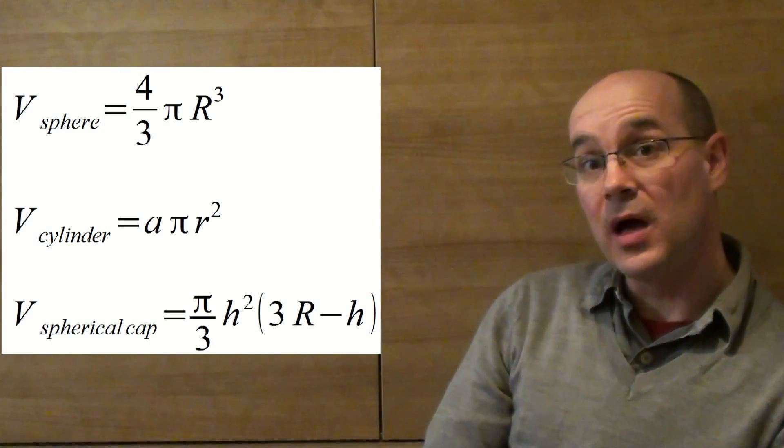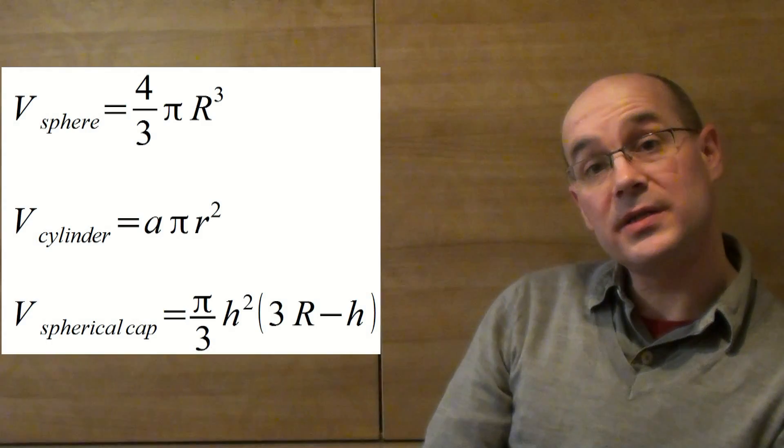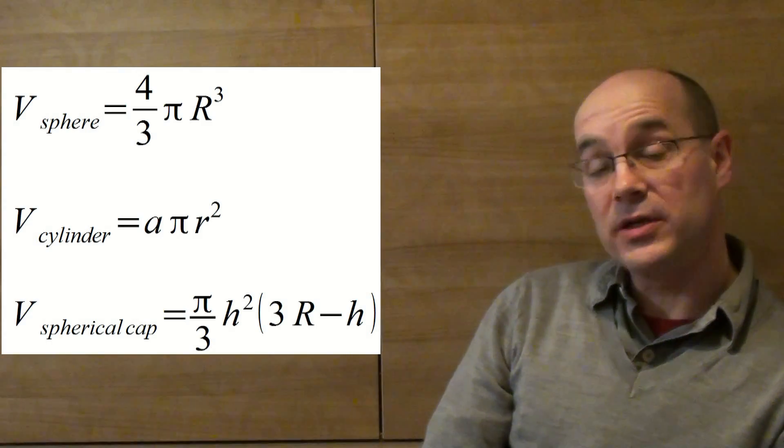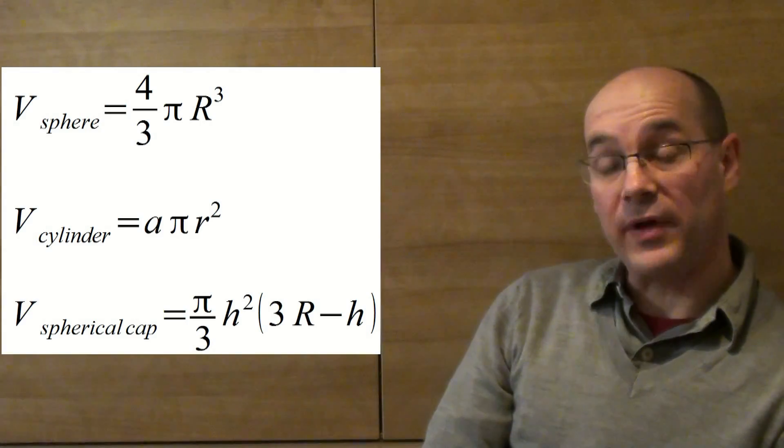The second is the volume of a cylinder with a radius of r and an altitude of a. Be careful, the radius of the sphere and the radius of the cylinder are not the same.